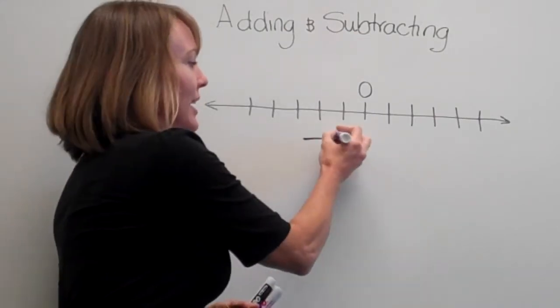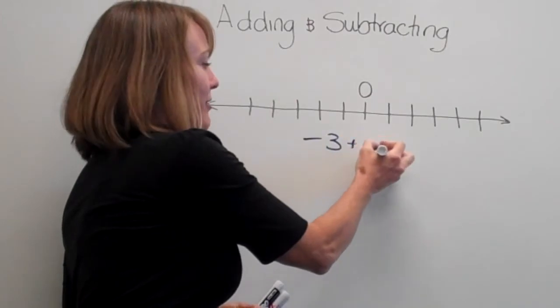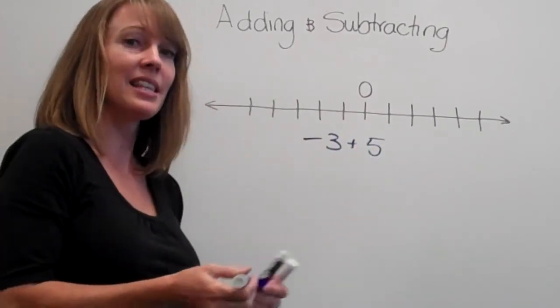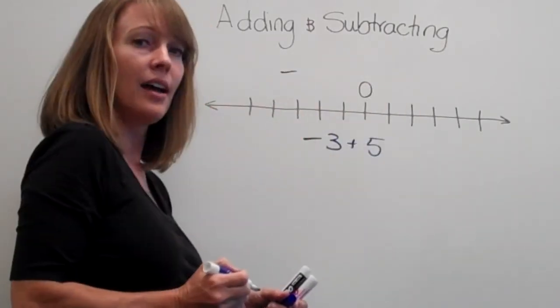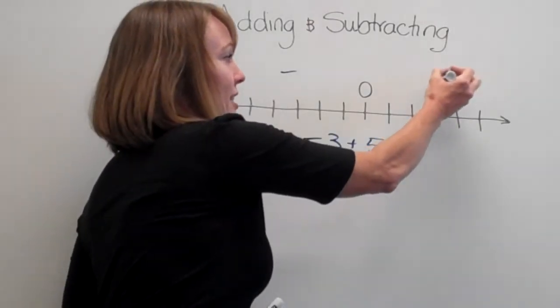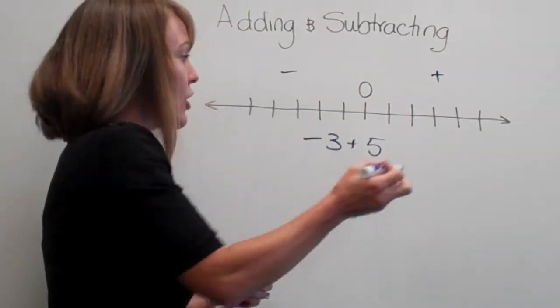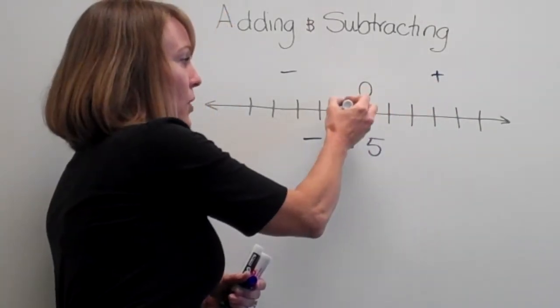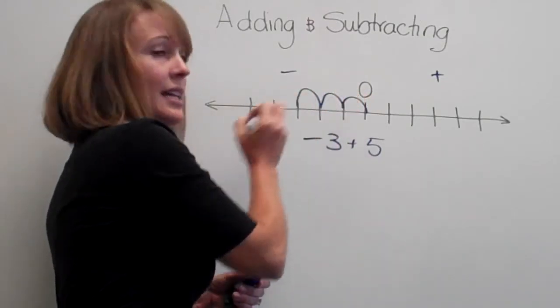Let's say that we have negative 3 plus 5. Now we know from class that the negatives are on this side of the 0 and the positives are on this side of the 0. So if we start at 0 and we say negative 3, we go 1, 2, 3 negative.